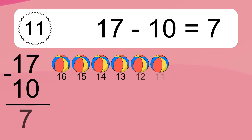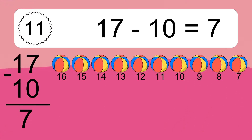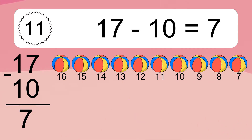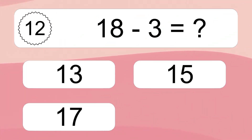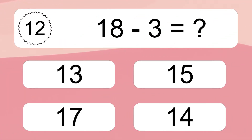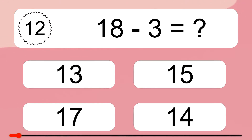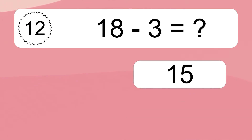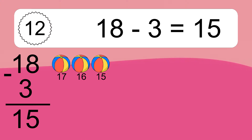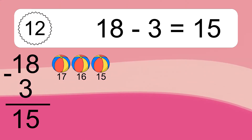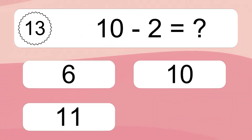17 minus 10 equals what? 17 minus 10 equals 7. Let's count it: 16, 15, 14, 13, 12, 11, 10, 9, 8, 7. 18 minus 3 equals what? 18 minus 3 equals 15. Let's count it: 17, 16, 15.